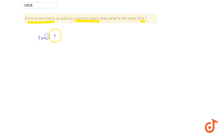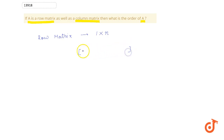A row matrix has an order of 1 into n. It has a single row and it can have multiple columns. It can have elements A11, A12, A13 up till A1n. A row matrix has only one row.